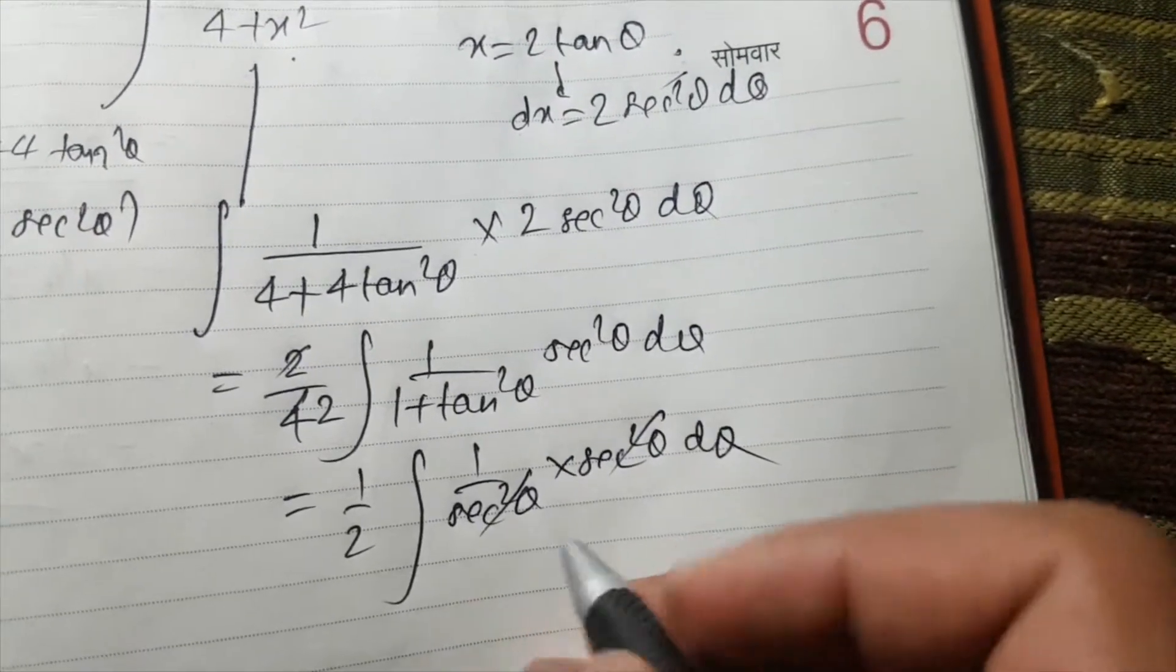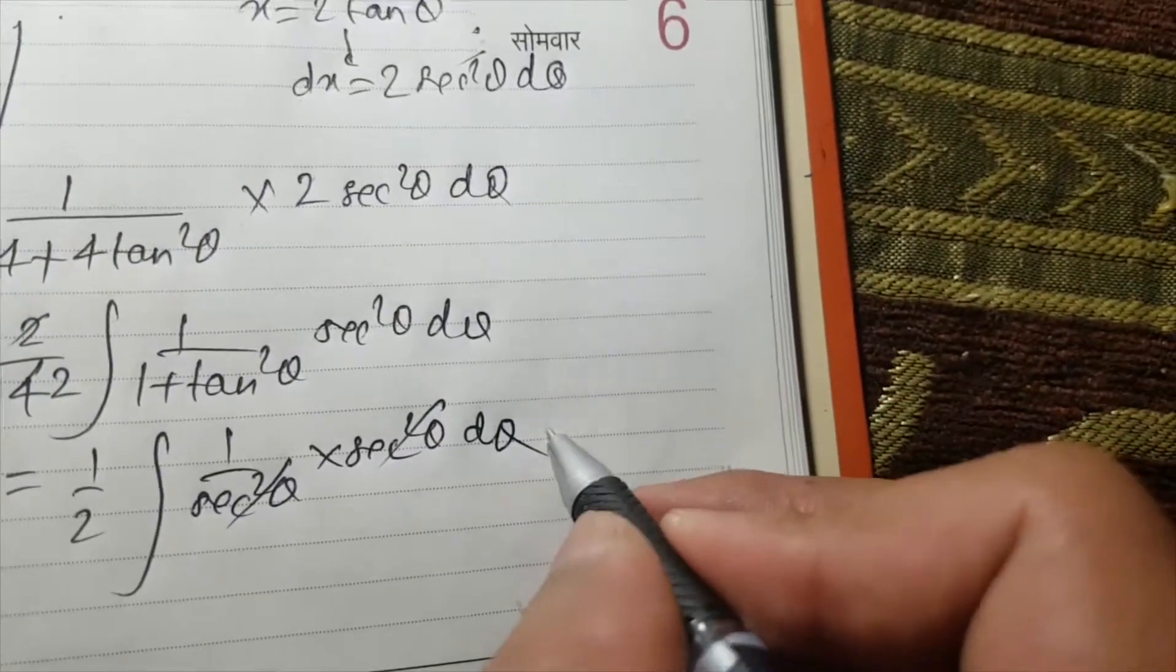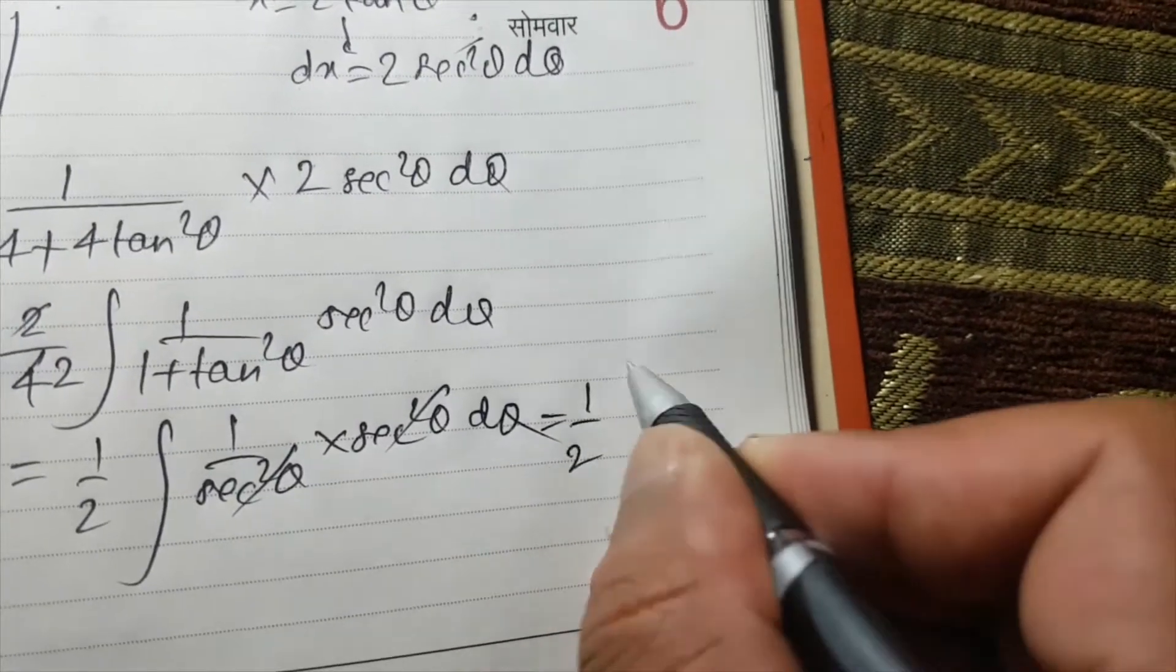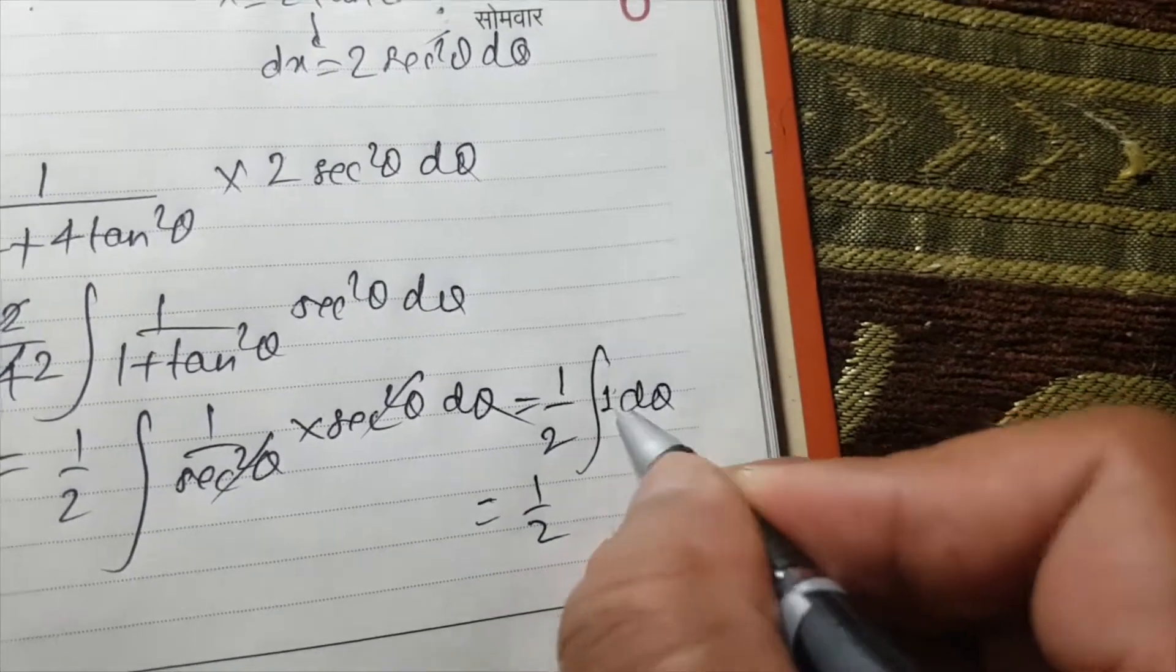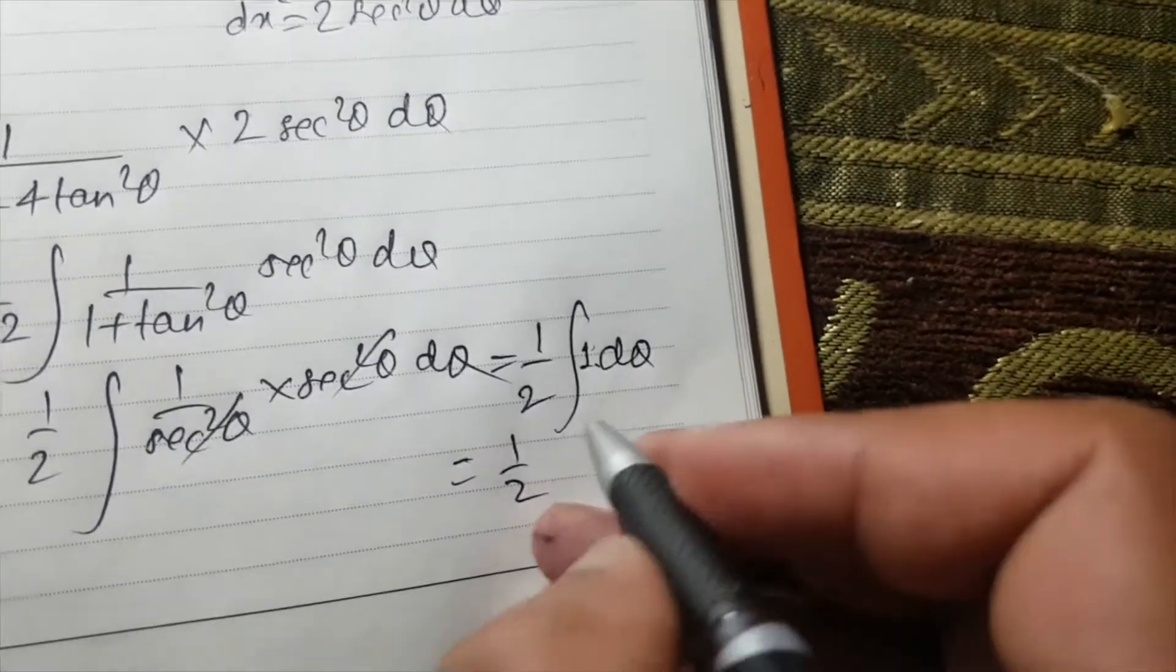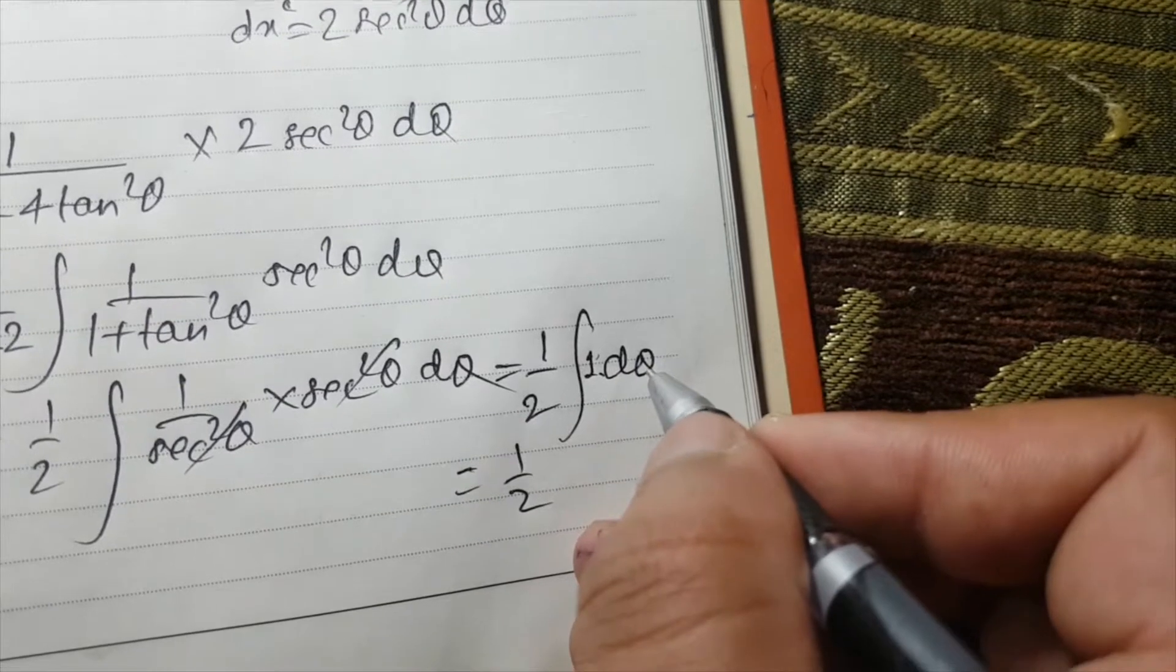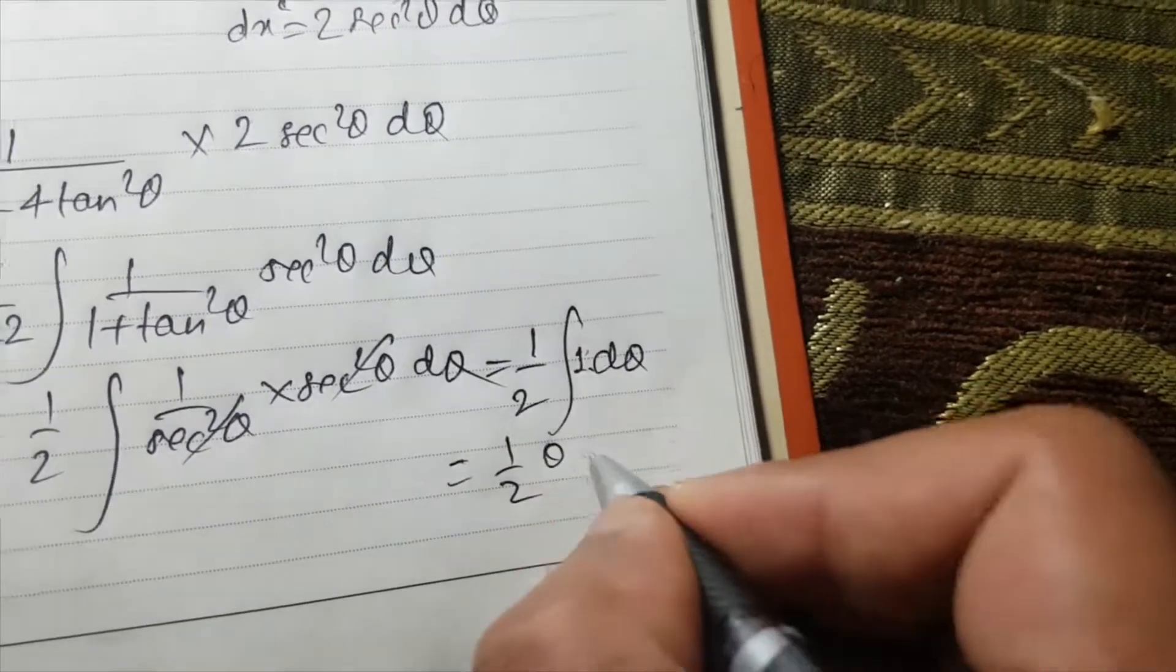These will cancel out and we will remain with half d theta. Now it will become half theta. So the integration of constant is, it will become theta only. The result is half theta.